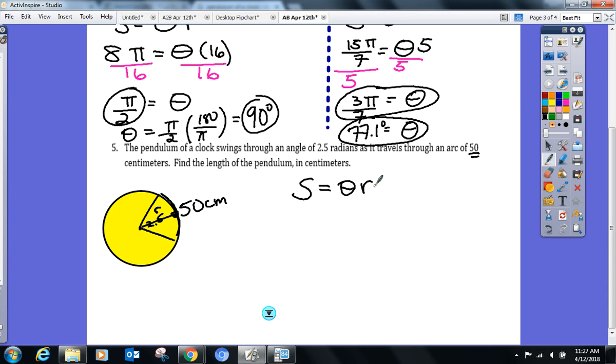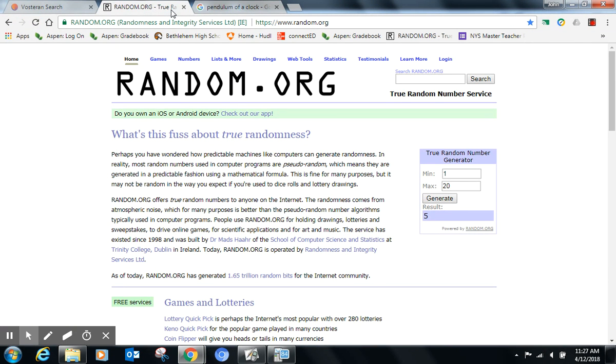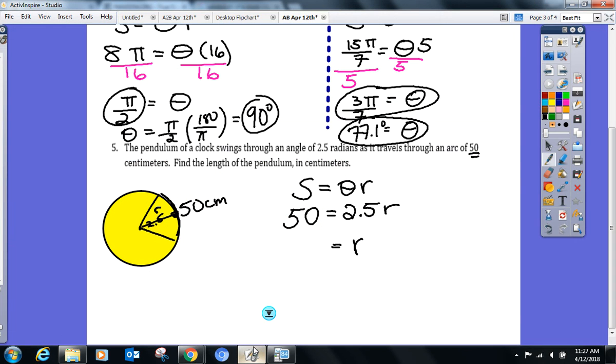Arc length? 50 equals theta, we know 2.5 times R, the radius, the length of the pendulum, which is what we're trying to find. And what are you coming up with for that one? 20 centimeters. Thank you for the units. We're almost there. Ready to roll? Next one.